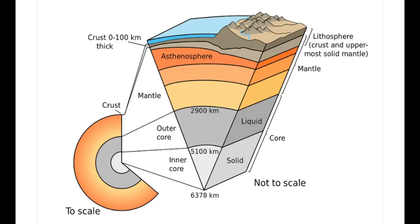The outer core is made out of molten iron and nickel with about 10% sulfur. The inner core is under extreme pressure, which is why it remains solid. It is made up of solid iron and nickel.